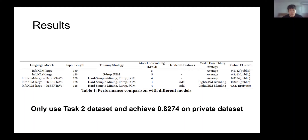The results are shown on this slide. We only used the Task 2 dataset and achieved 0.8274 on the private test set. It's amazing!